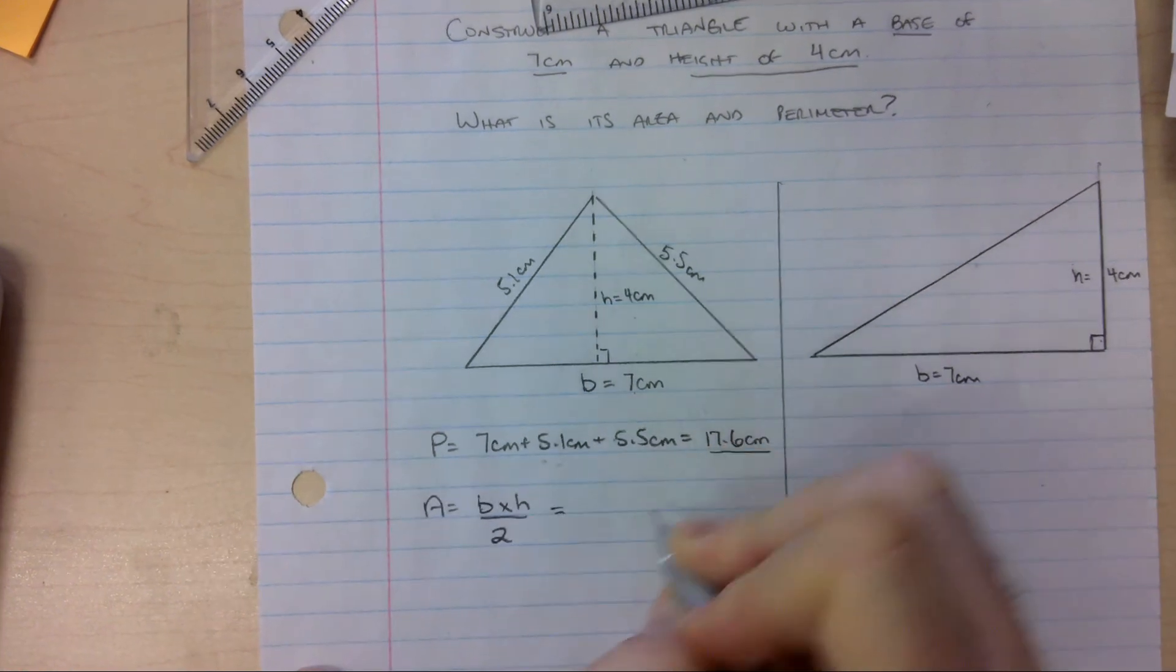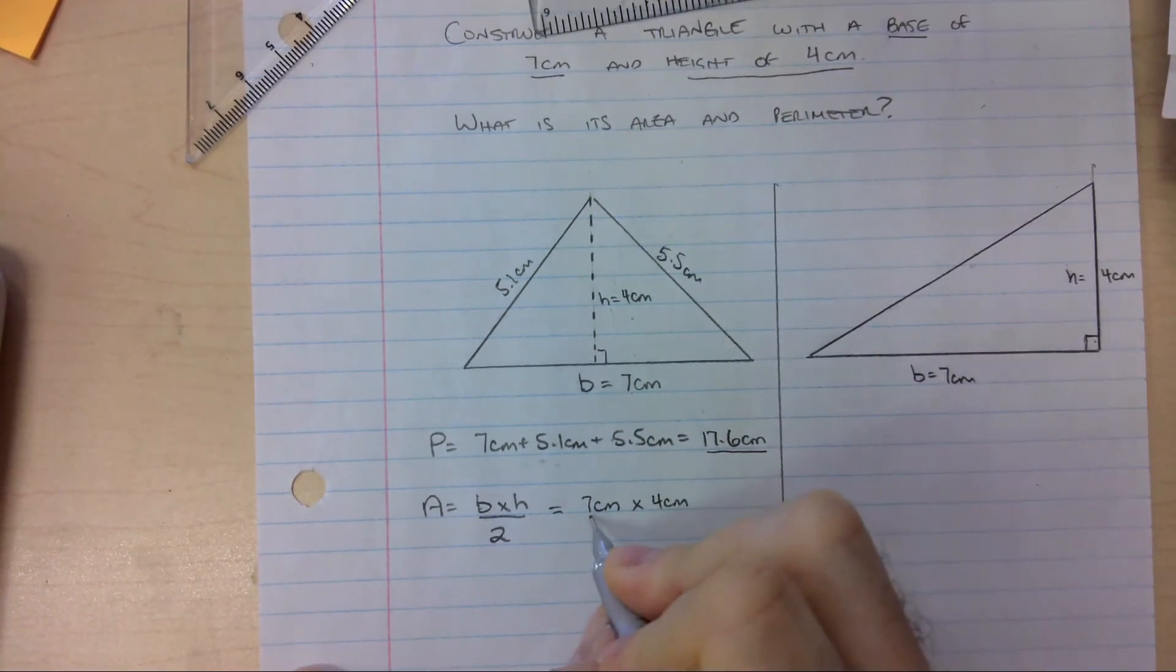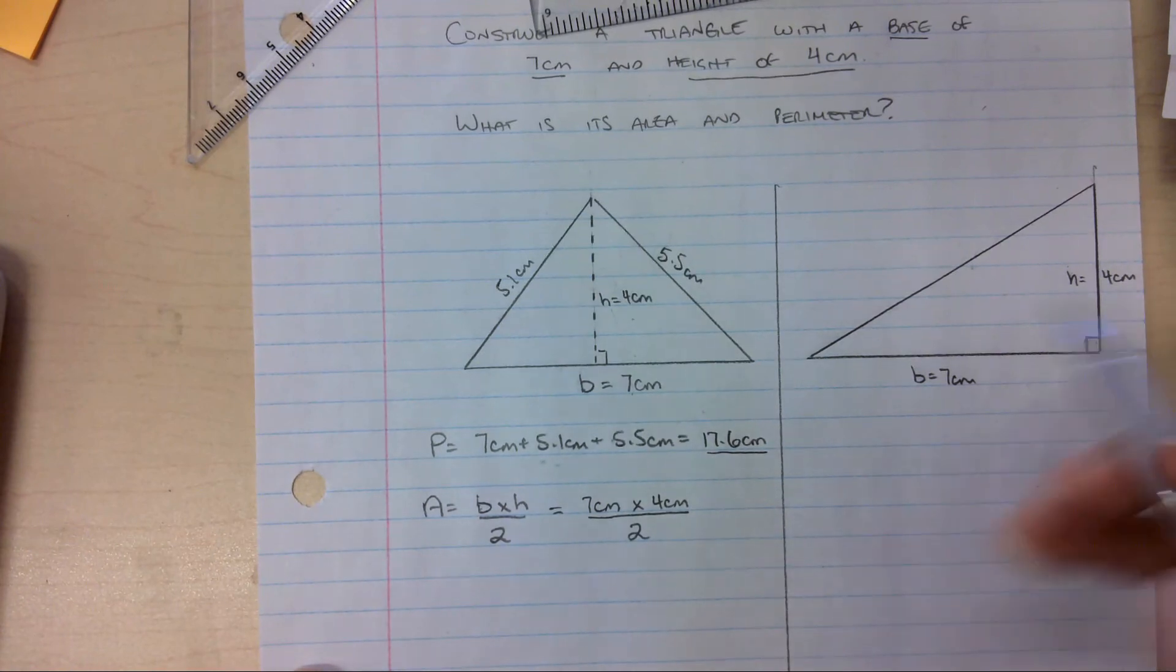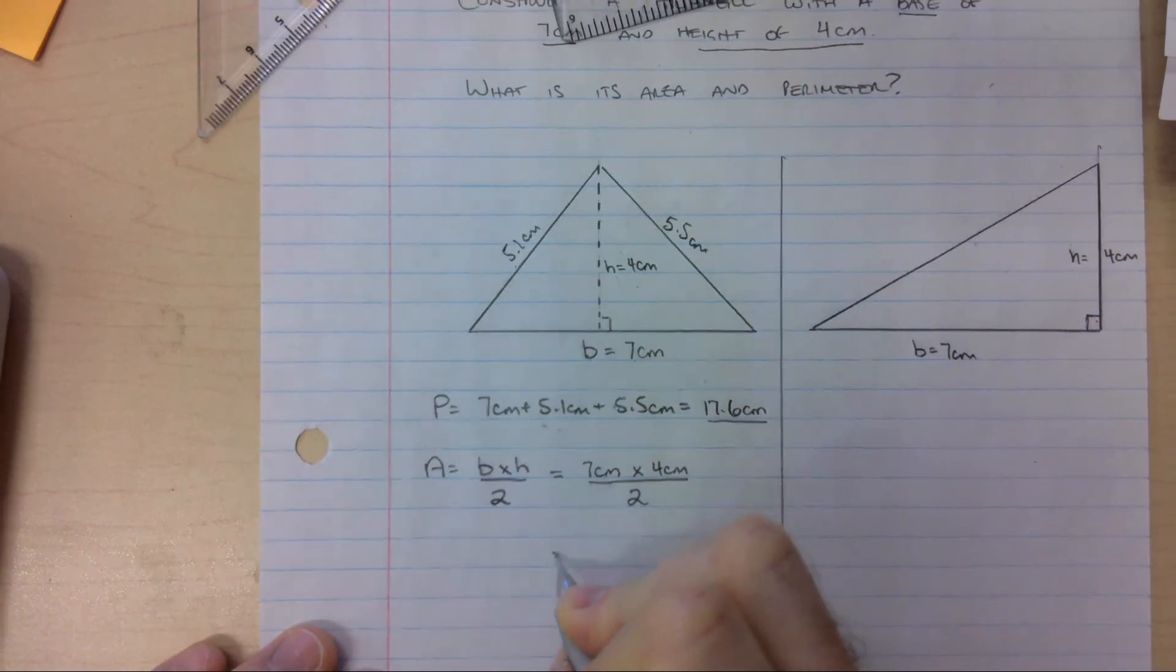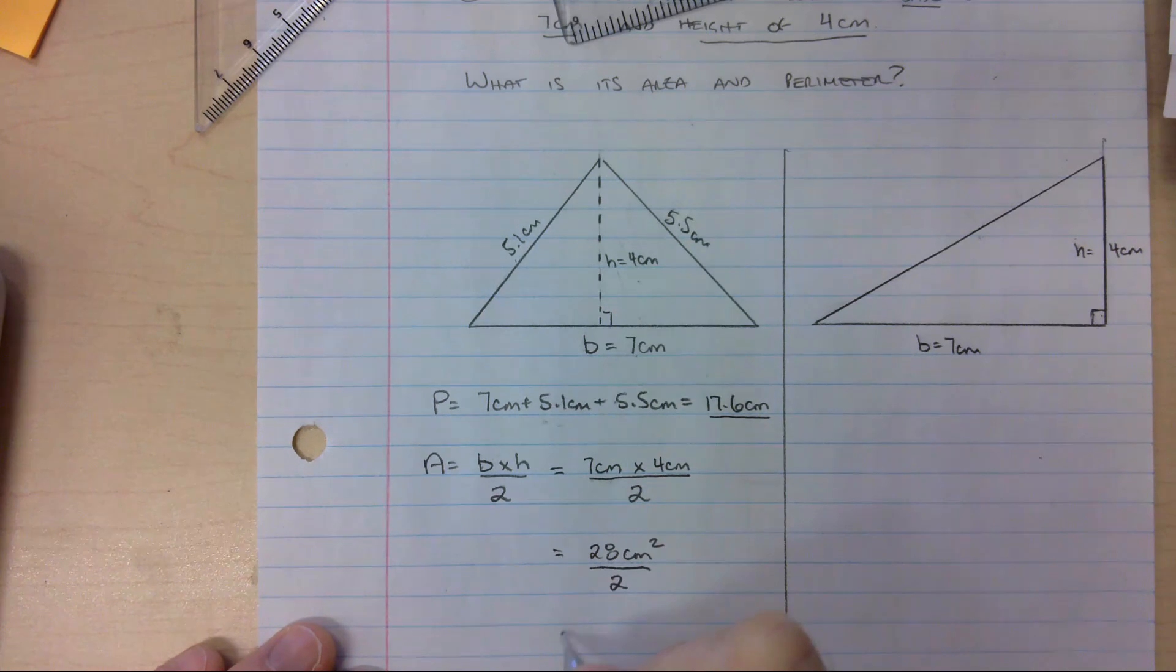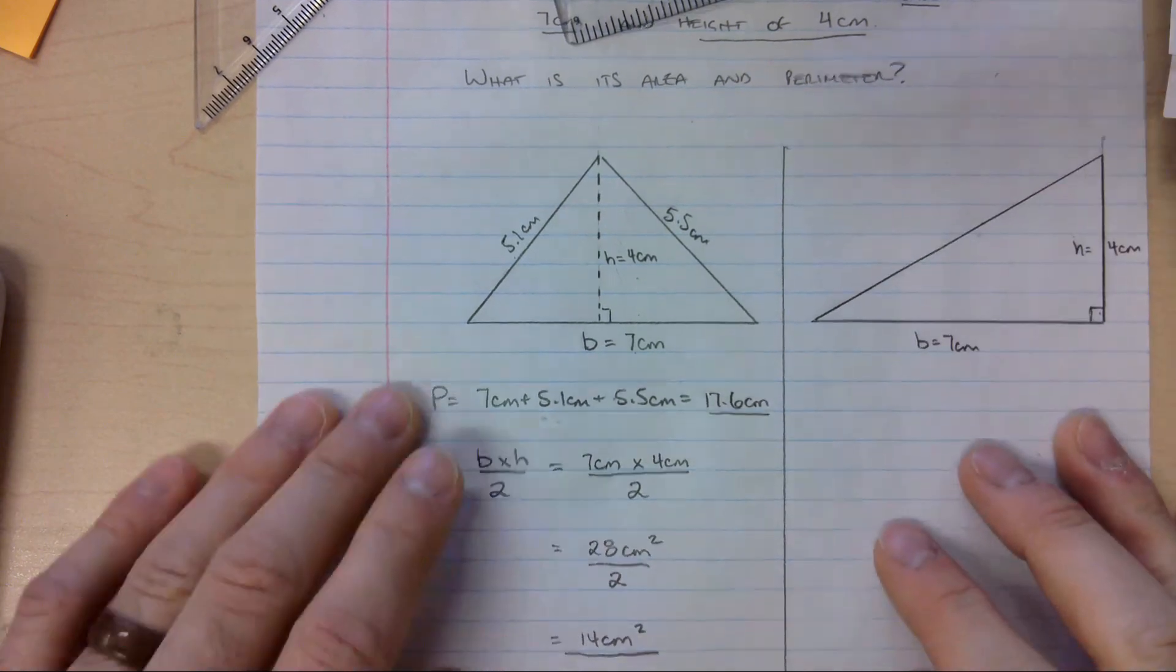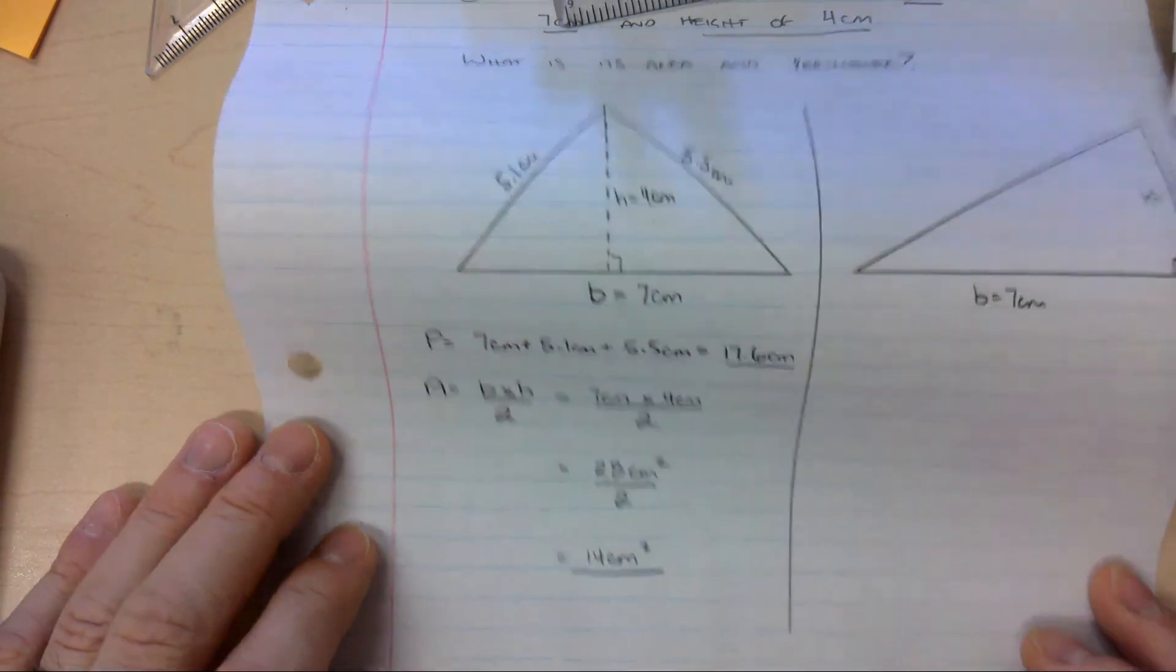So I know that my base is 7 centimeters. I know that my height is 4 centimeters. That 2 never changes, so I'm always going to divide it by 2. I don't need these two sides. So my area is going to be 7 times 4, which is 28 centimeters squared divided by 2. 28 divided by 2 is going to be 14 centimeters squared. So my final answer to this question is 14 centimeters squared. I hope that was helpful.